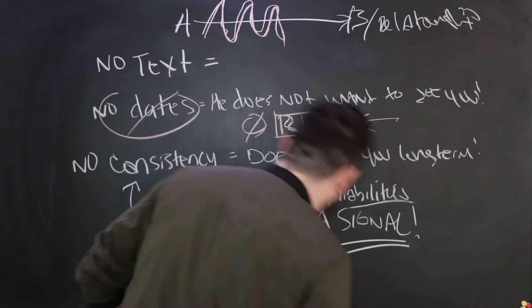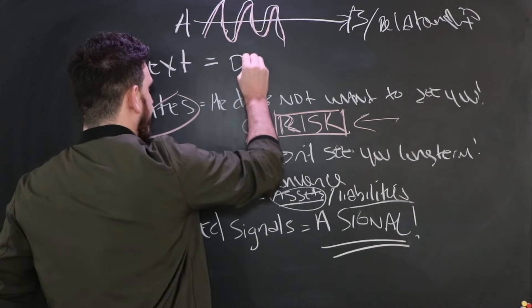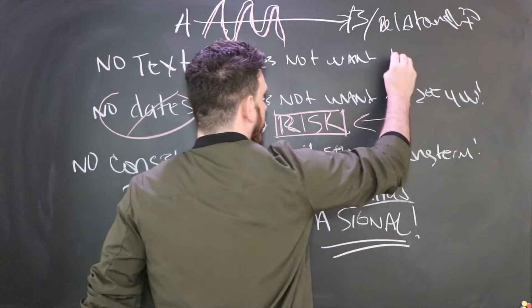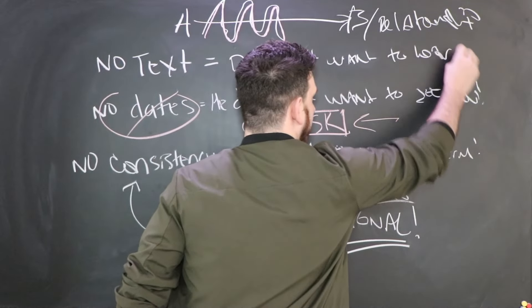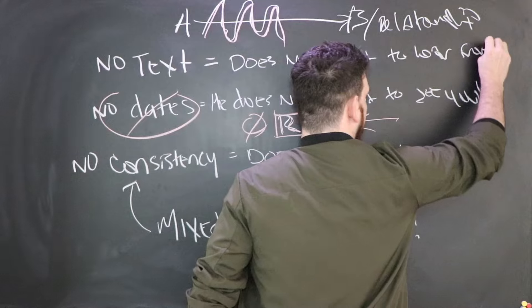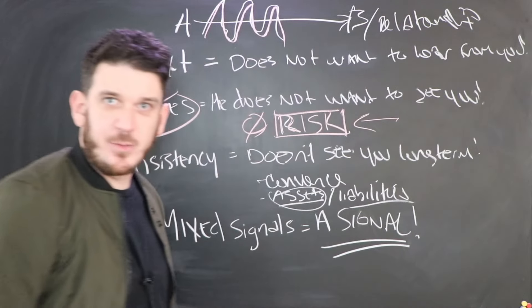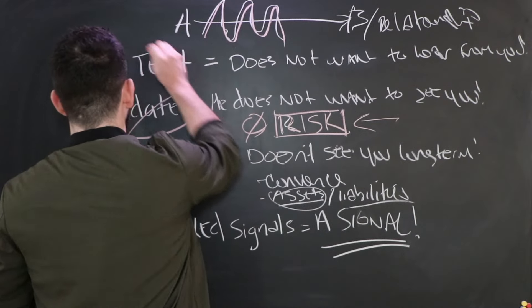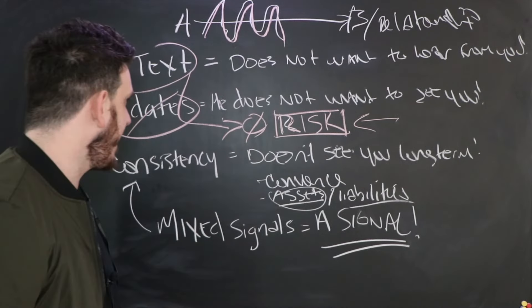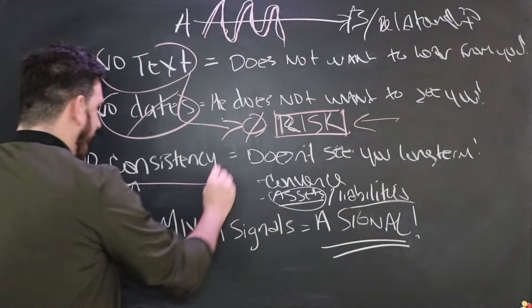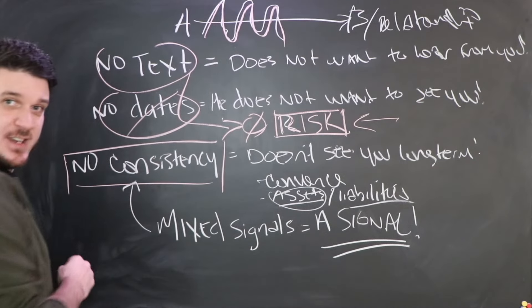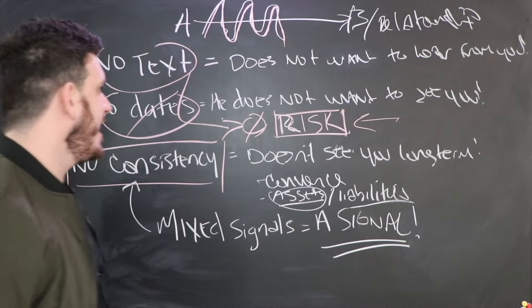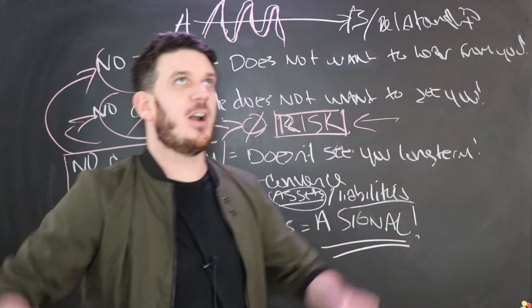Okay. No texting means he does not want to hear from you. Okay? He doesn't want to hear from you. It goes right back down to here. If you have a guy who is not consistent, meaning he's not doing this and he's not doing this, it is a guy who does not care about a relationship.